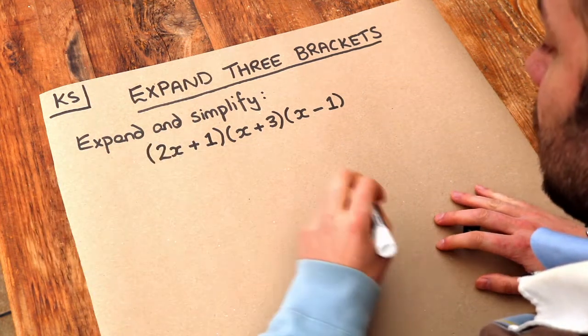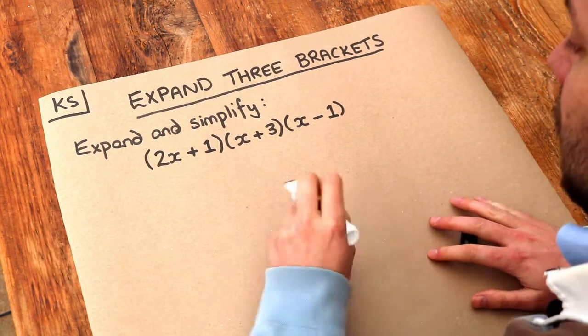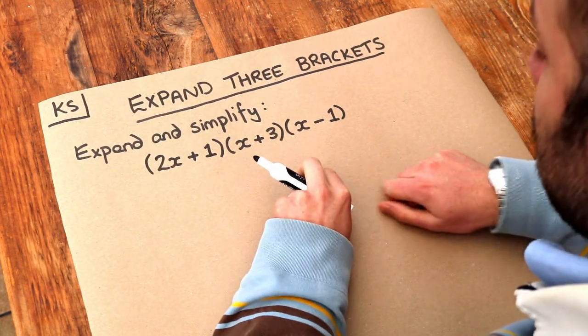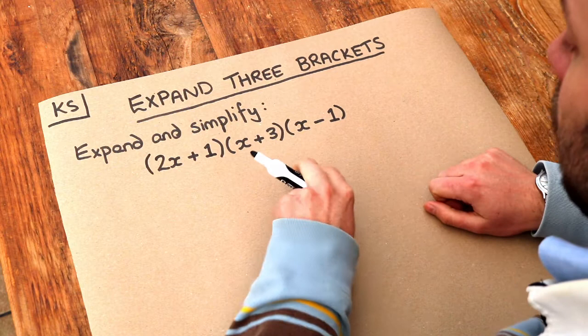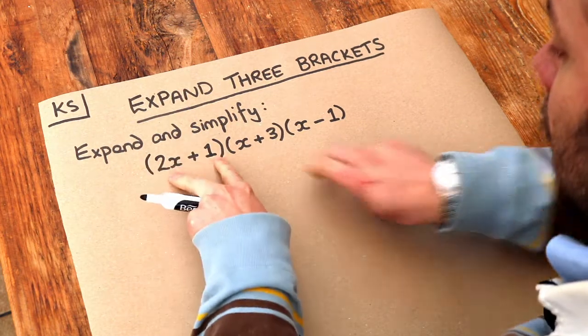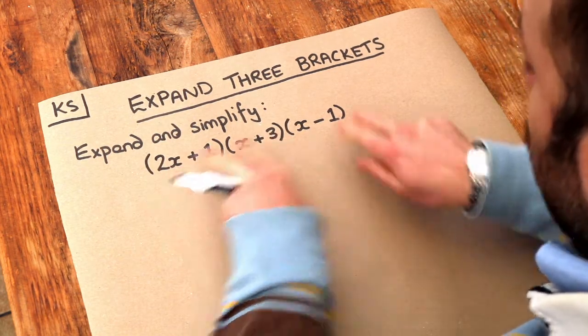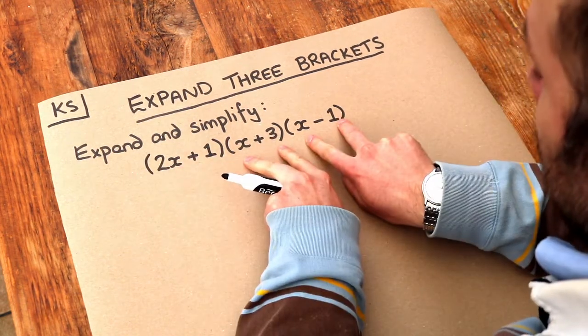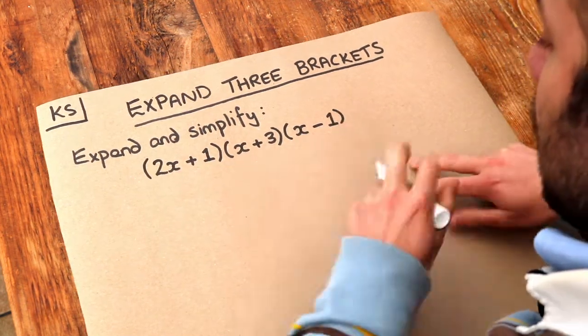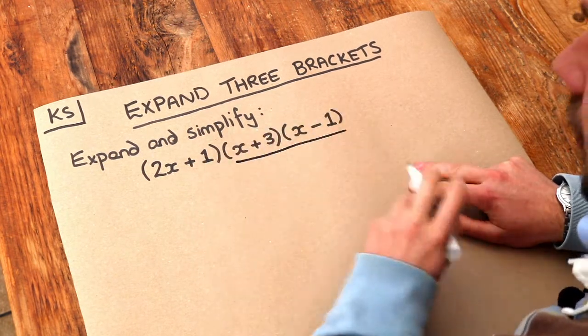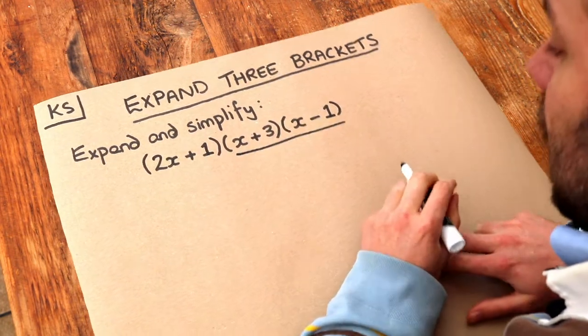What I tend to do is concentrate on two of the brackets first. So we could either multiply these two brackets first, or we could multiply these two brackets first. I'm going to multiply these two brackets first, but it doesn't actually matter.